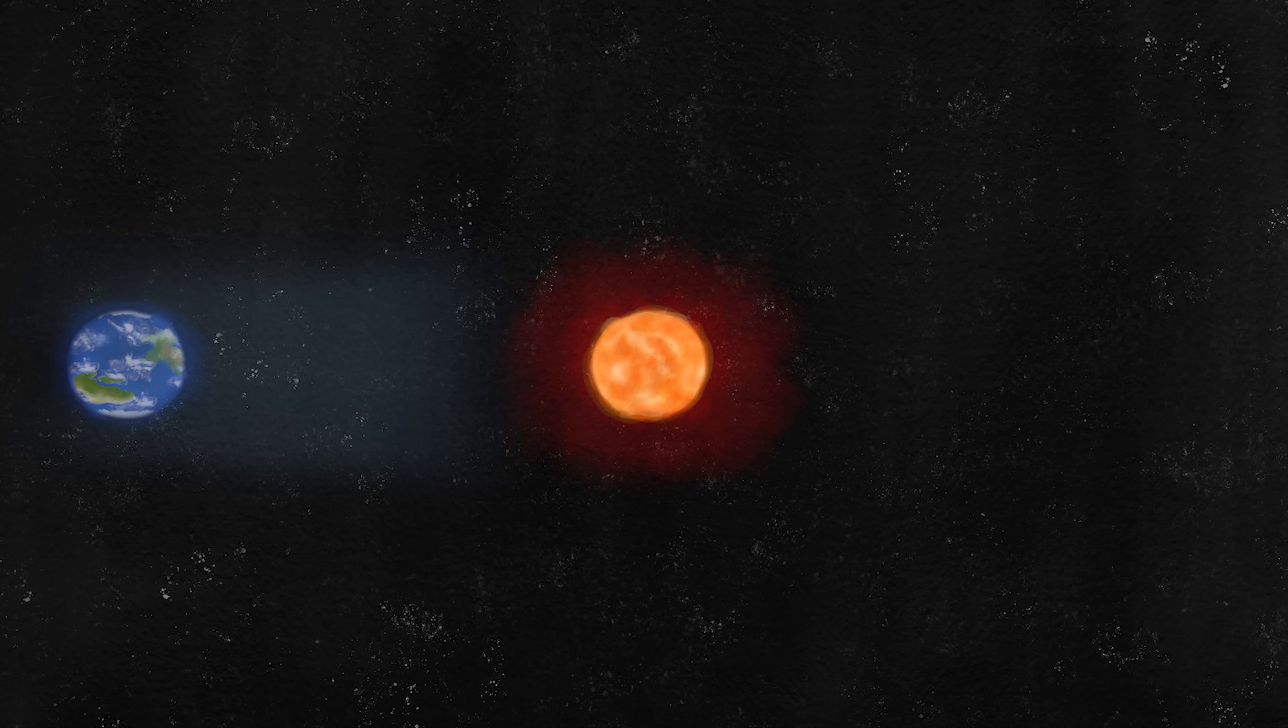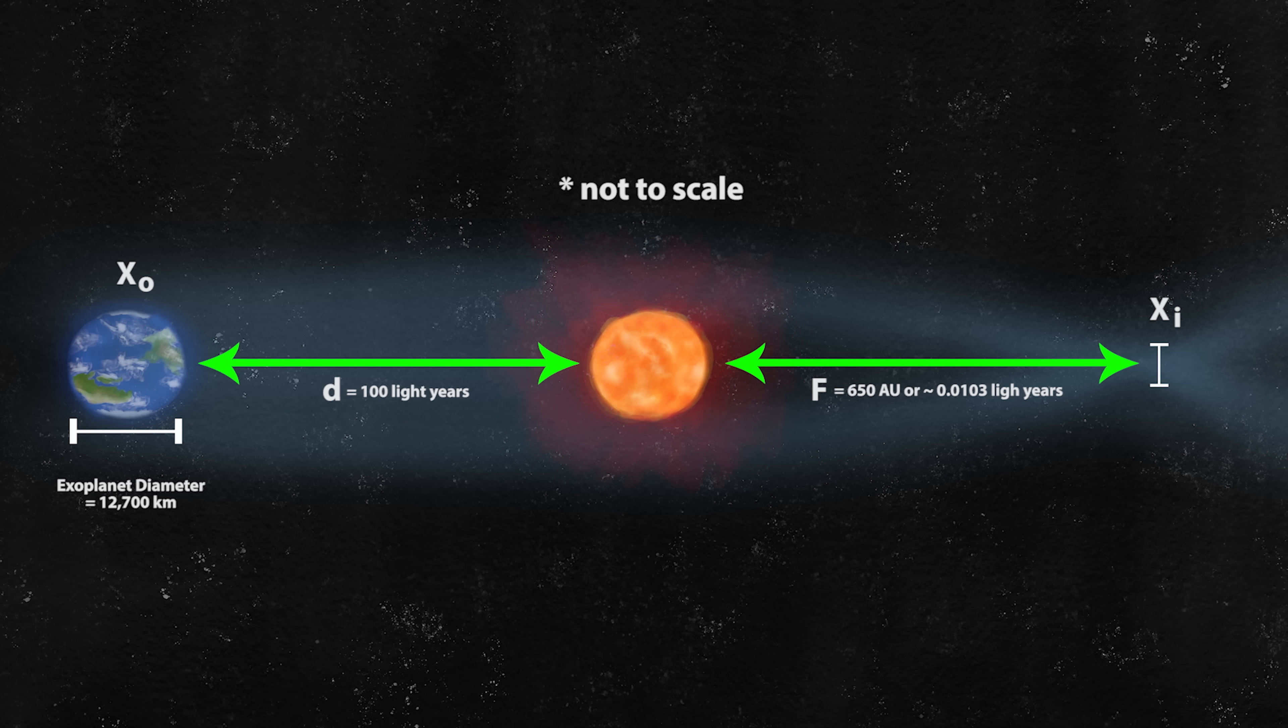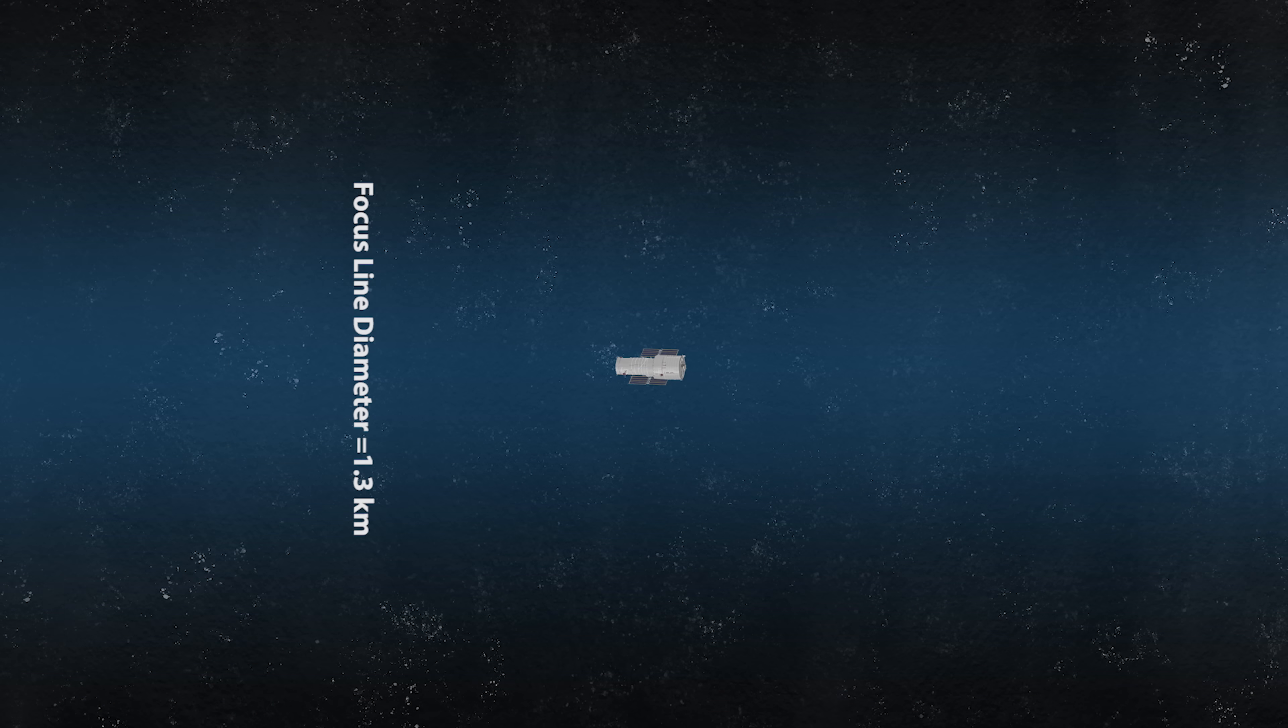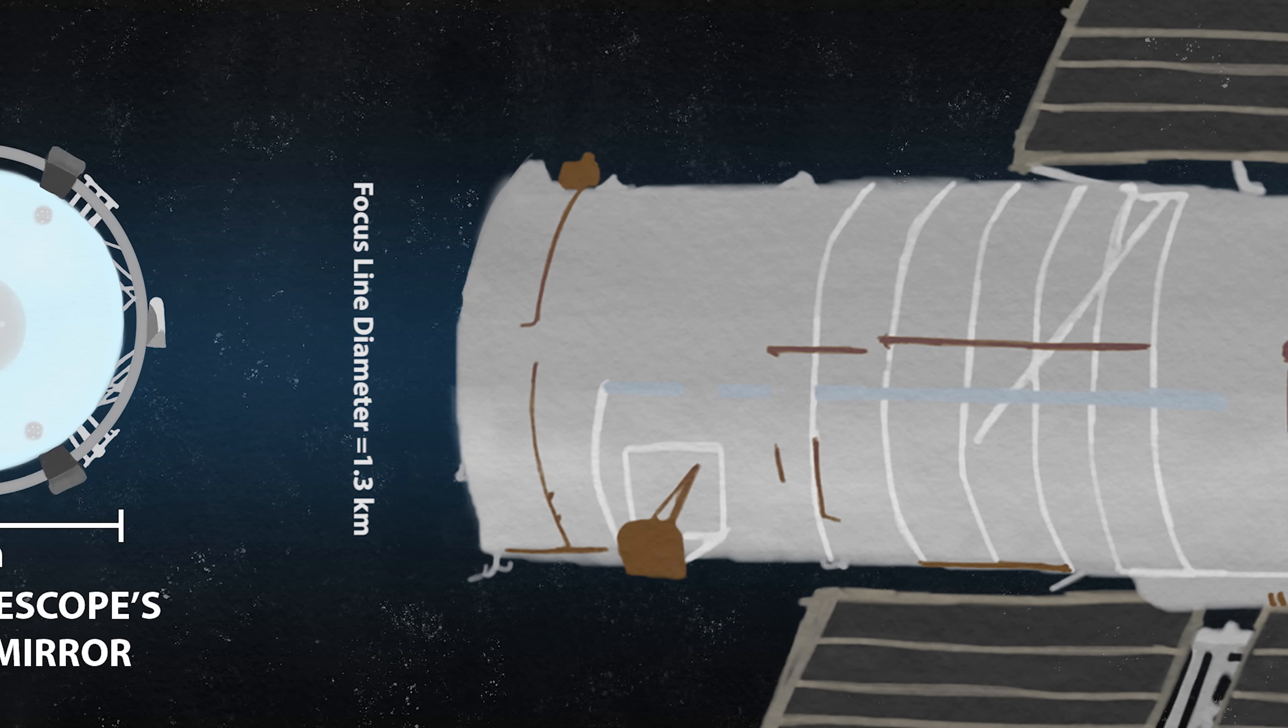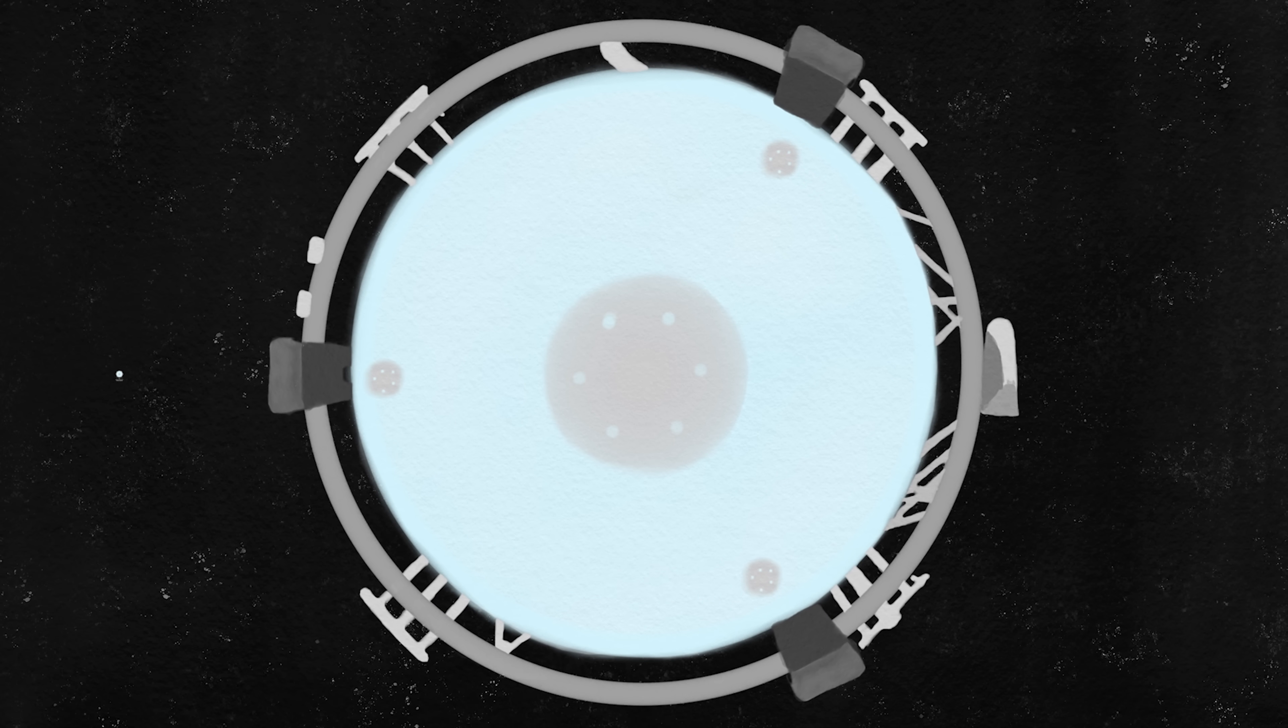But with those variables in mind, the area of the focus line that our telescope needs to cover would be a cylinder with a diameter of about 1.3 km. You would need a telescope that's at least that size to resolve the entirety of the Einstein ring in one picture. That's 206 times larger than the primary mirror in the Hubble telescope.